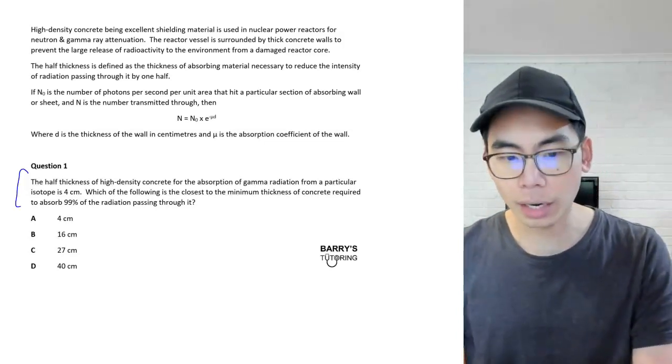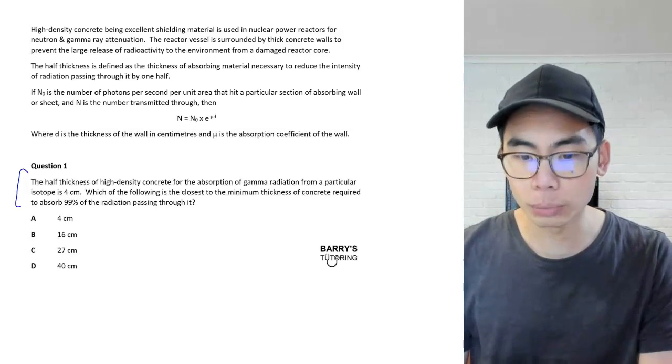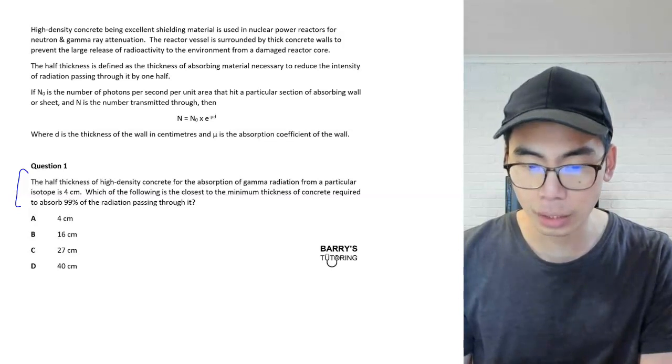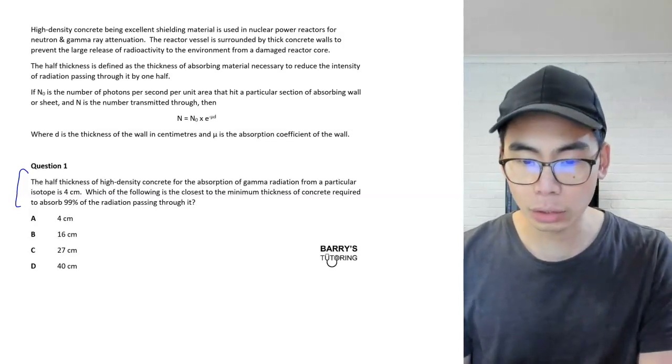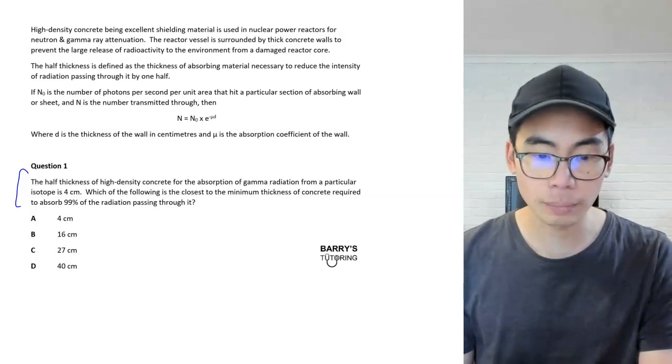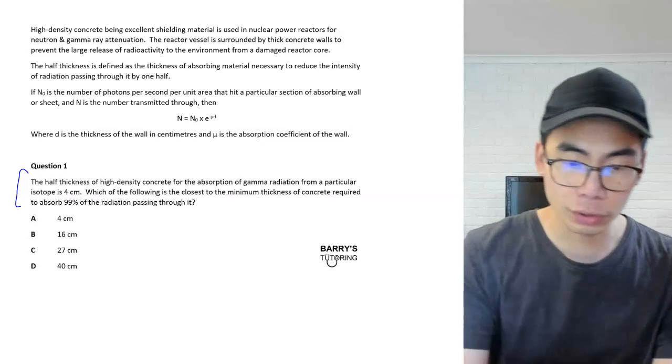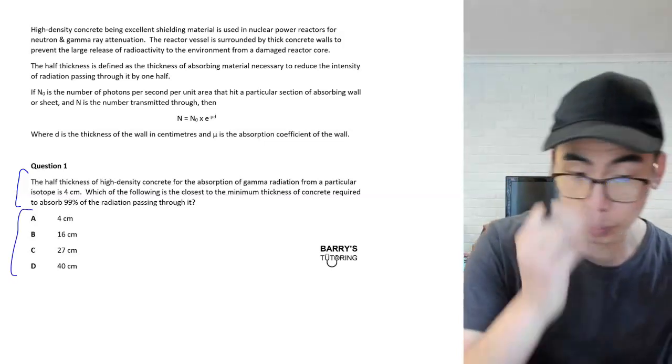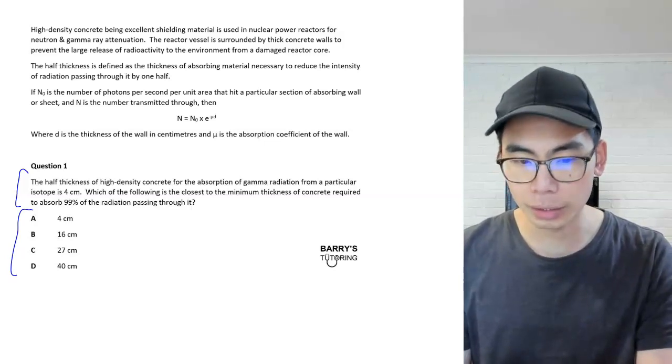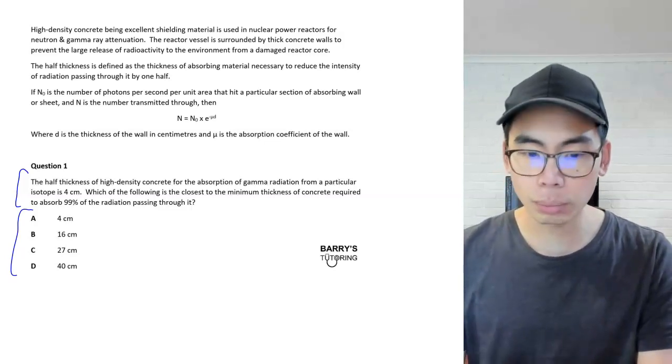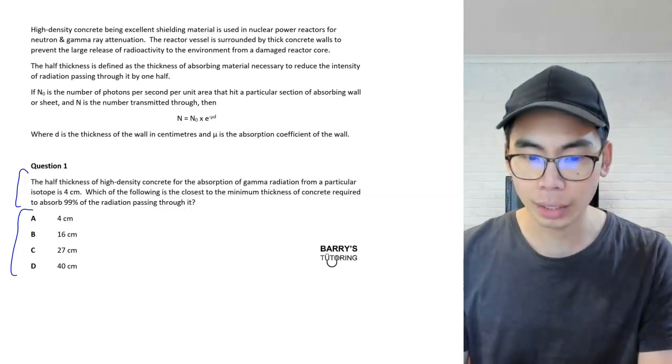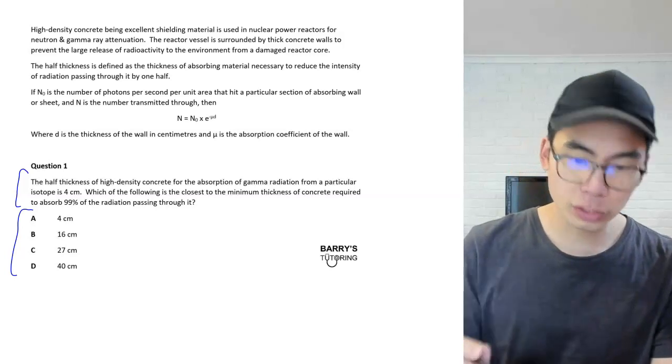The half thickness of high density concrete for the absorption of gamma radiation from a particular isotope is four centimeters. Which of the following is the closest to the minimum thickness of concrete required to absorb 99% of the radiation passing through it? We've got the options as well: 4 centimeters, 16 centimeters, 27 centimeters, and 40 centimeters. By the way, you could pause the video at this stage and give this a go before we go through the explanation.